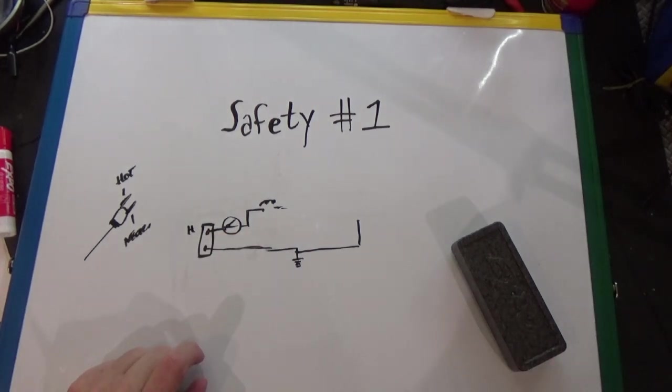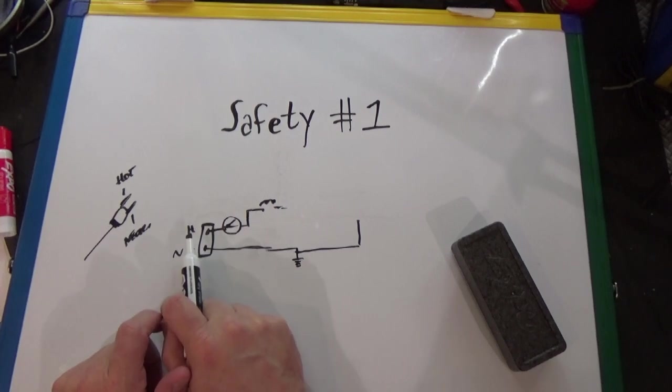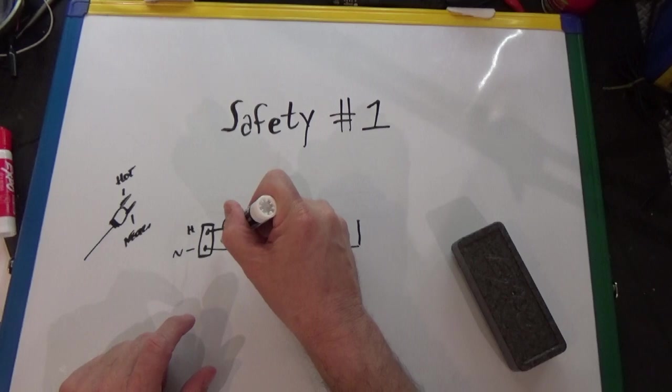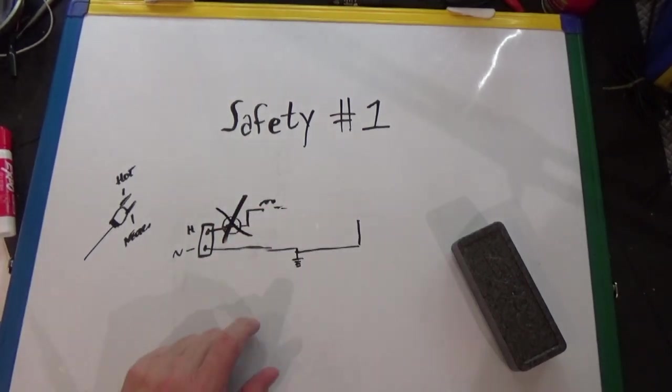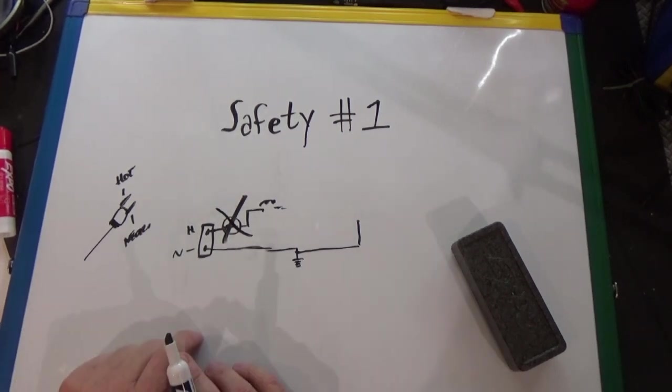How do you know the hot side? That's going to be the thinner plug. The wider one is going to be neutral. Now, if you look at what we have here, by doing that, your hot side is always going to be switched. And when you turn that switch off, there's no electricity coming into the radio at all. Your neutral going to ground is fine.